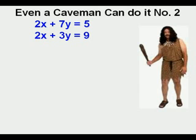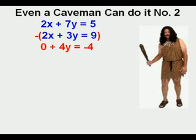Let's try this system. We have 2x plus 7y equals 5, and 2x plus 3y equals 9. This one's not set up so neatly where we can add both equations together, so he'll have a little challenge. But Og has an idea. He can cancel the x's by subtracting the bottom equation from the top equation. So 2x minus 2x equals 0. 7y minus 3y equals 4y, and 5 minus 9 equals negative 4.